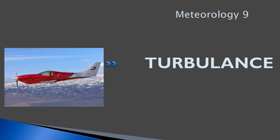Hello, everyone. Welcome back to prepilotgroundschool.ca. This is our ninth lesson in meteorology. We're going to be discussing turbulence. You might be wondering, what's this fast-looking airplane doing here? Well, that airplane is called Turbulence — one of Mike Patey's one-off home-built, amateur-built designs. It holds some sort of speed record from New York to LA. It's not really related to turbulence the weather phenomenon, but whatever.